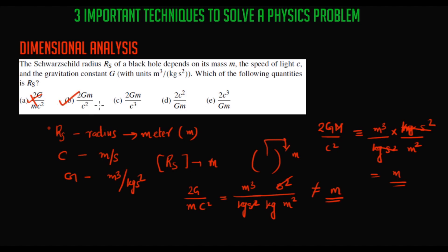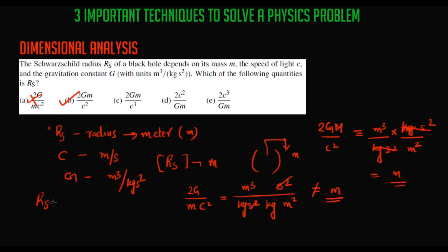Option B, 2GM/C², has the correct units of RS. Since the forms of the options are all different, we can easily conclude that RS = 2GM/C² using the dimensional analysis method.